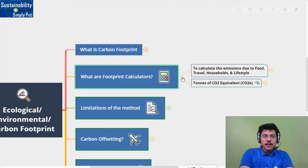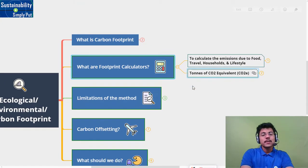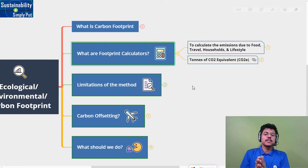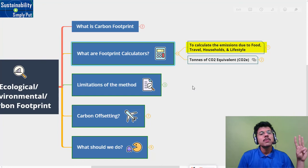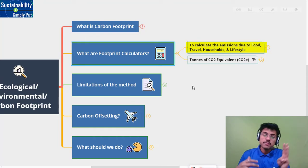To calculate this - how much we are emitting - it includes all the majorly four categories. First is about food, our food habits, what kind of food we eat. Second is about the travel, the commute. Third is about the household - which kind of house we have, what are the amenities we are using, how energy efficient the overall house is. And the fourth is about lifestyle.